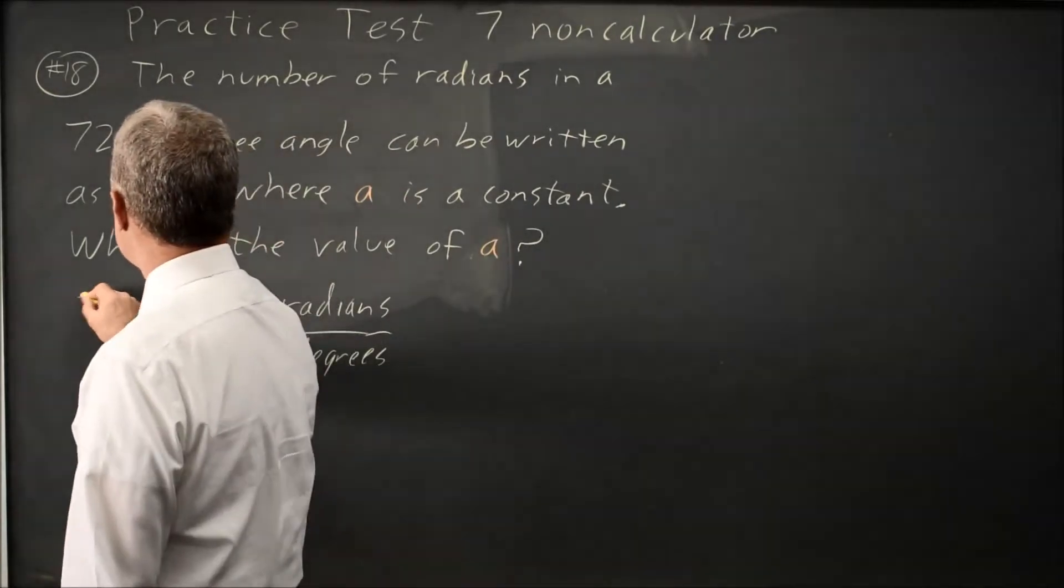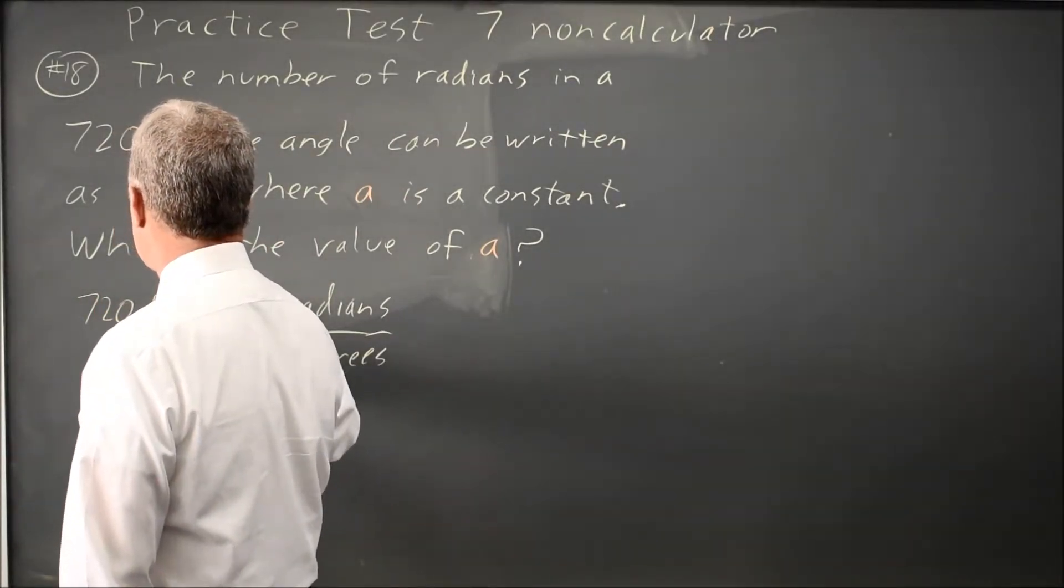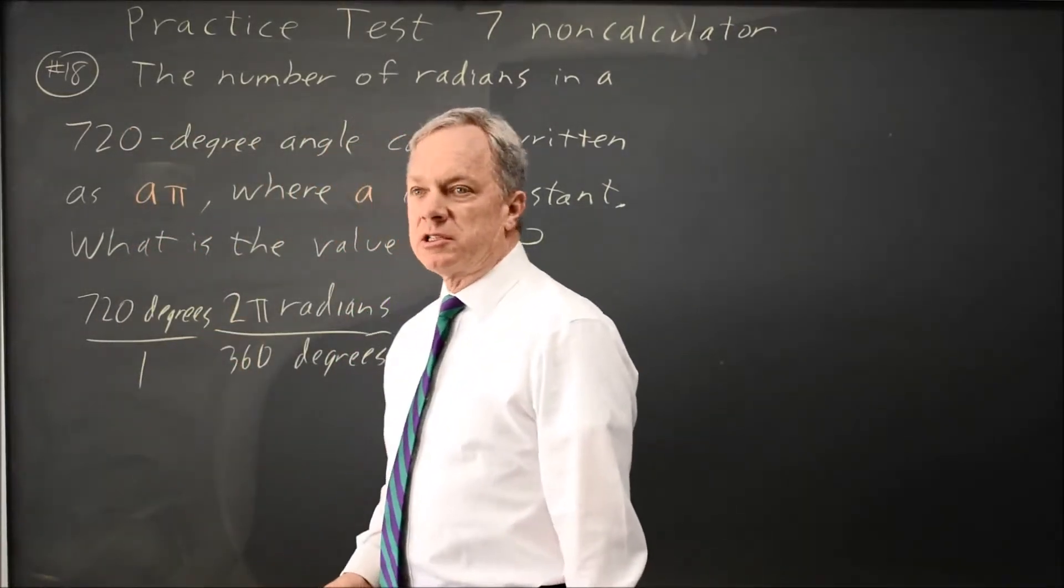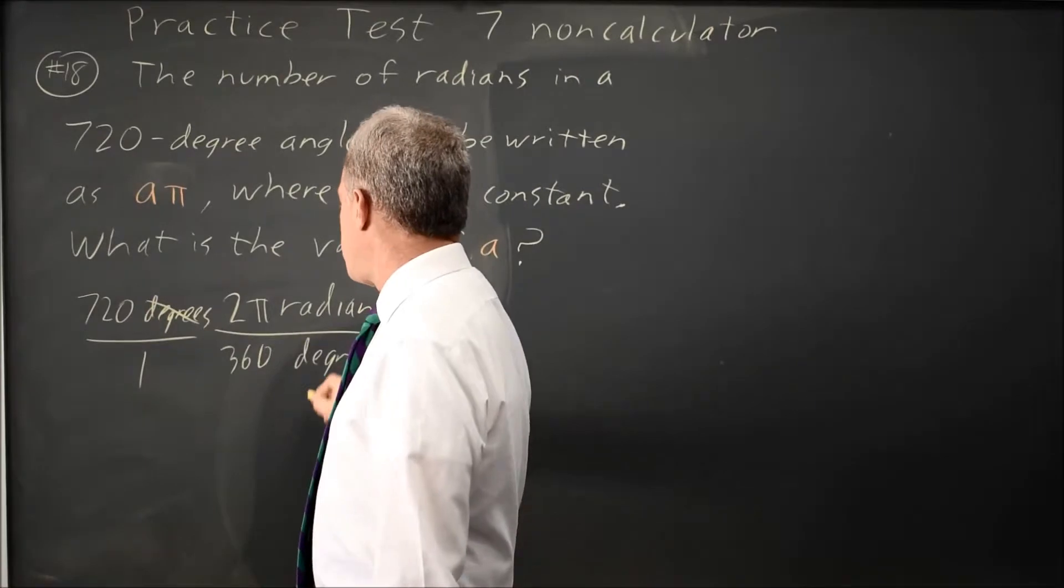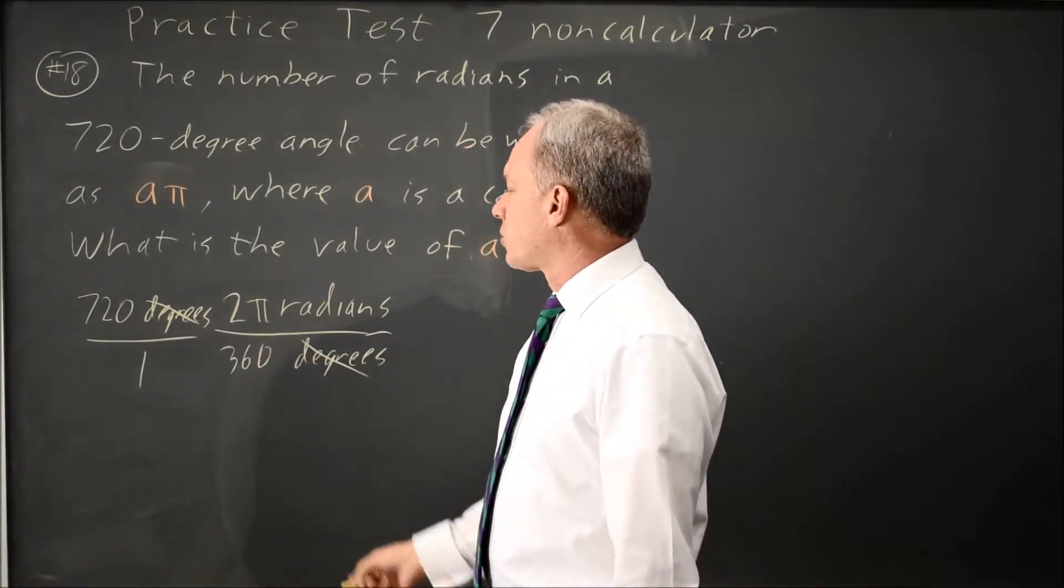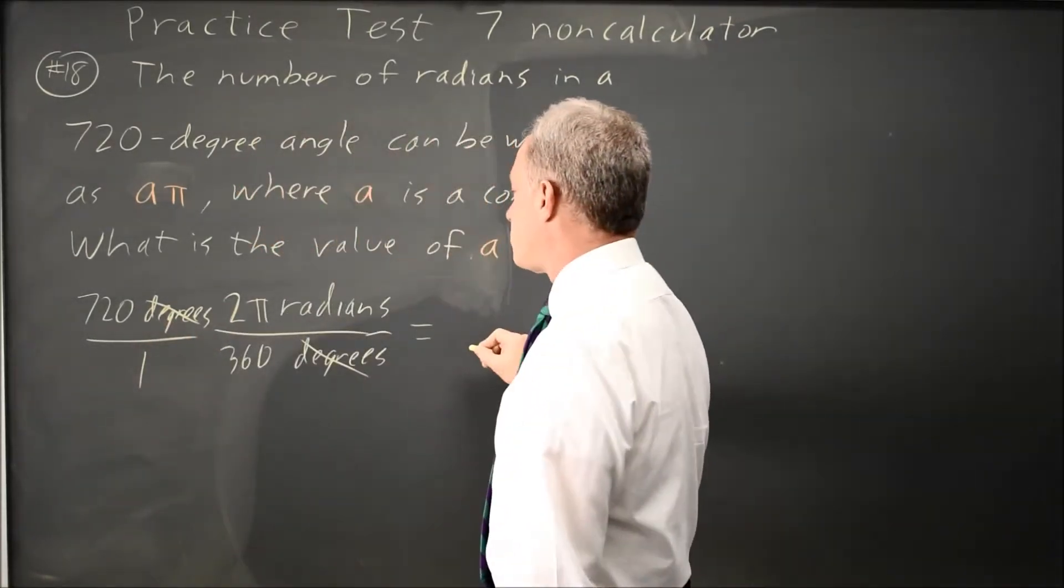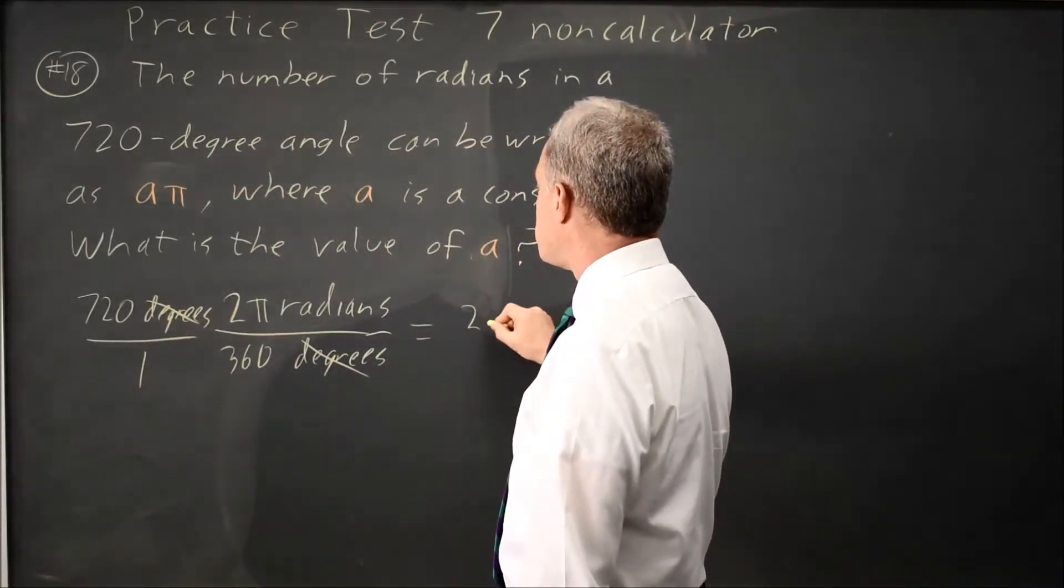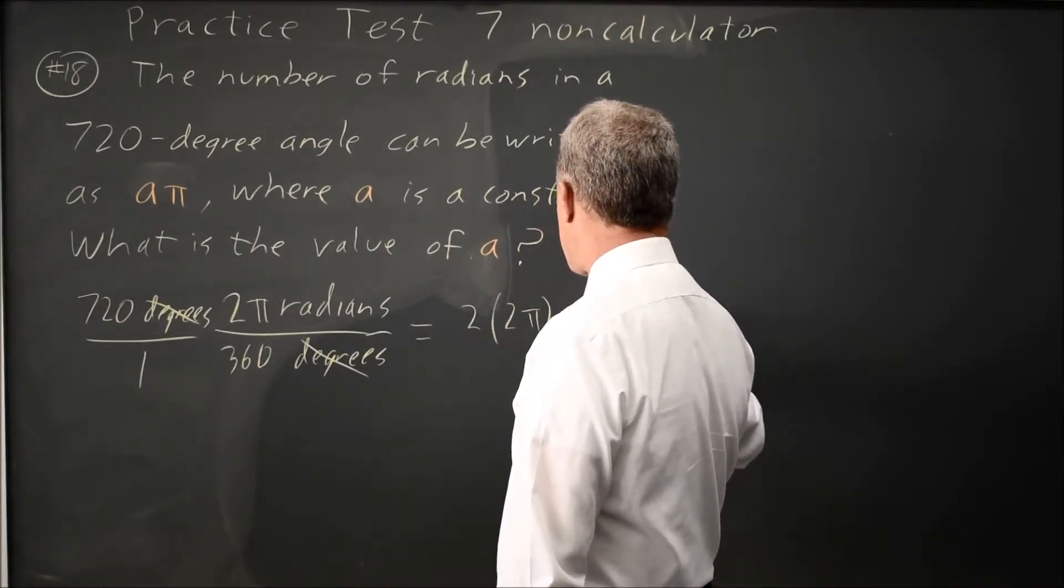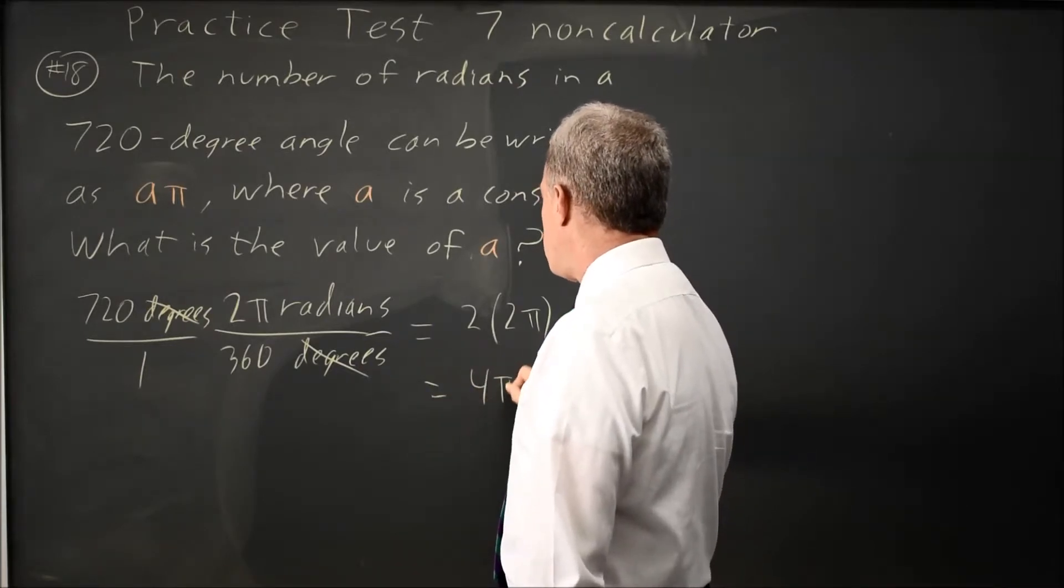If you multiply that by 720 degrees, like we do for converting units in chemistry, degrees cancel, and we're left with 720 times 2 pi radians over 360, and 720 over 360 is 2 over 1, so that's 2 times 2 pi radians, or 4 pi radians.